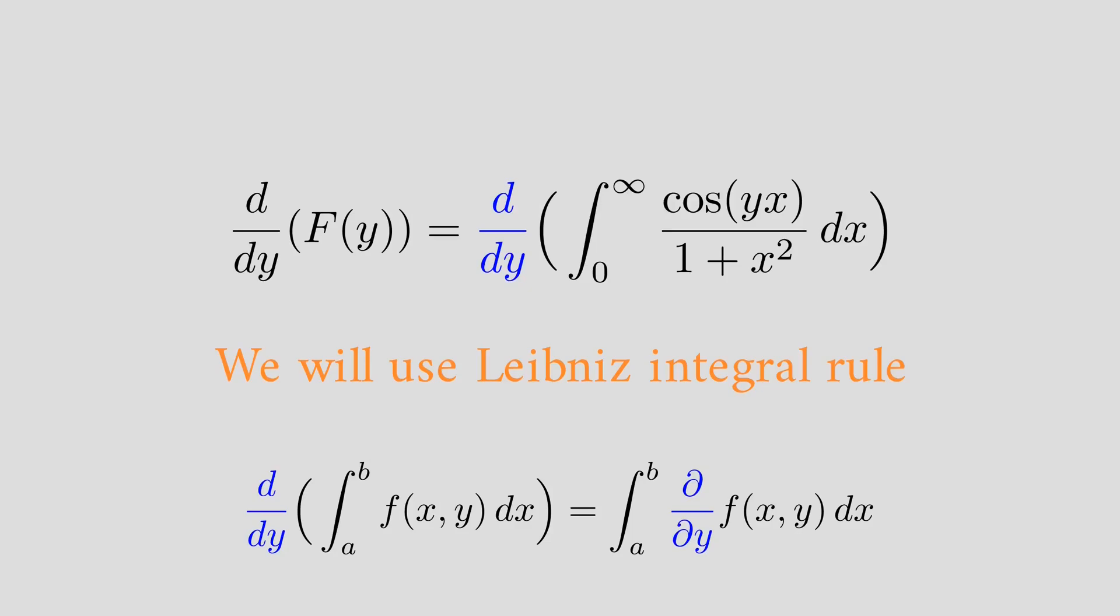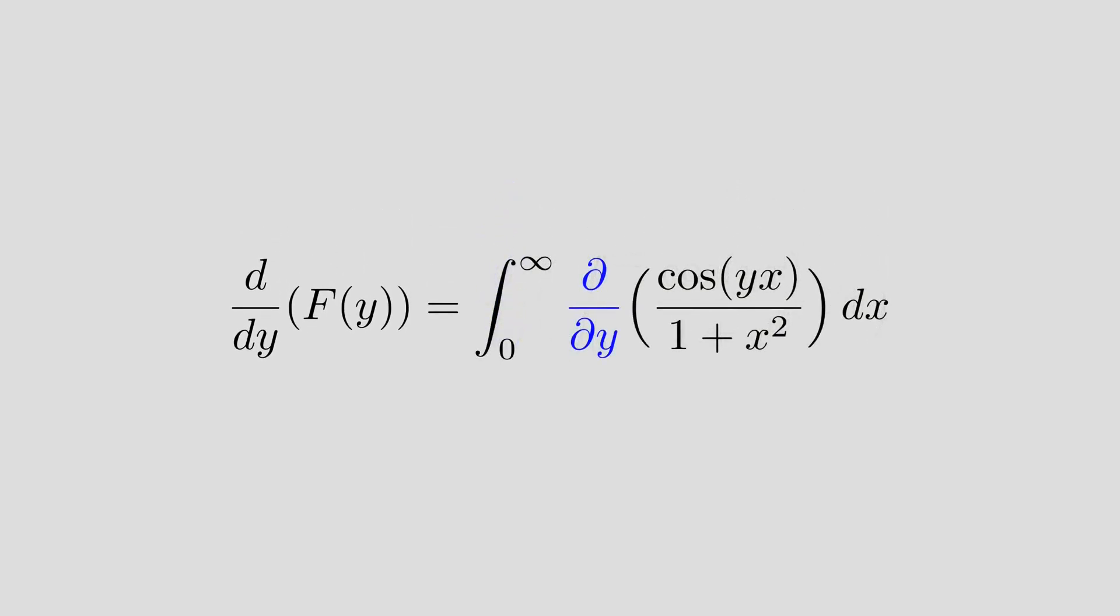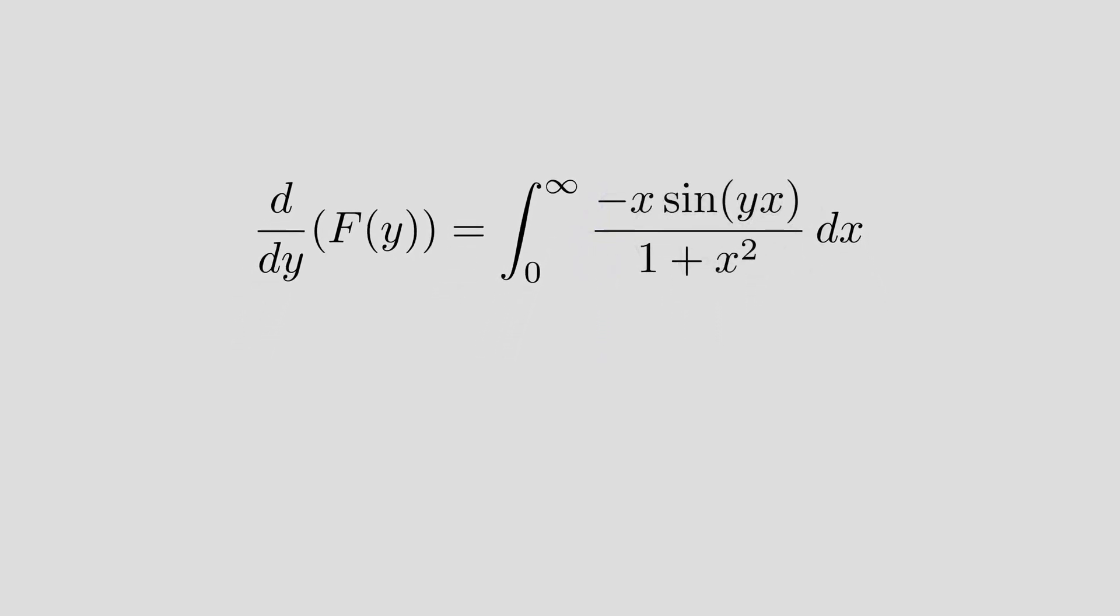After applying this to our integral, we can see that we need to differentiate cosine xy in y, which is minus x sine yx. We are going to simplify the expression inside the integral in the following way.